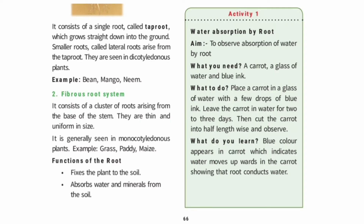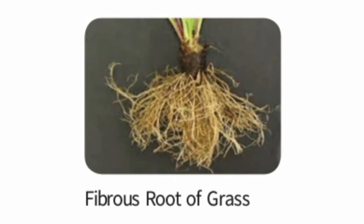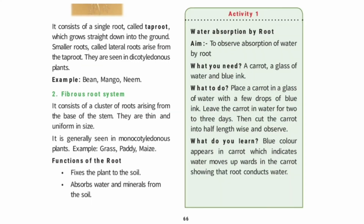The second type is the fibrous root system. This is seen in monocotyledonous plants — plants whose seeds have one seed leaf. Examples of fibrous root plants include grass, paddy, and maize.